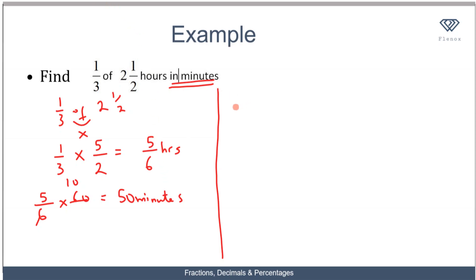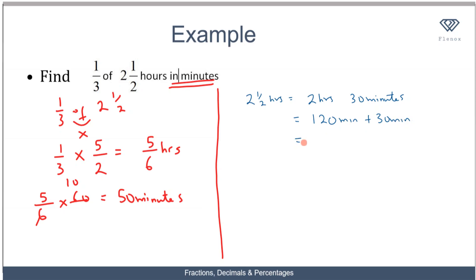For the second method, we convert two and a half hours to minutes before calculating. Two and a half hours is the same as two hours and 30 minutes. Two hours equals 120 minutes, so we add 30 minutes to get 150 minutes. Then one third of 150 gives us 50 minutes. You can either convert after evaluating or convert the hours to minutes before calculating.